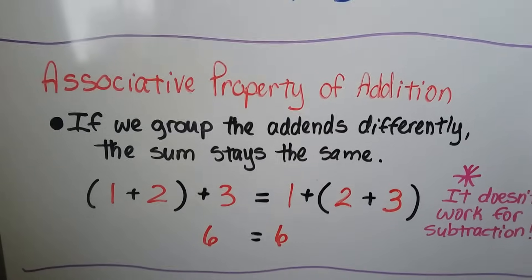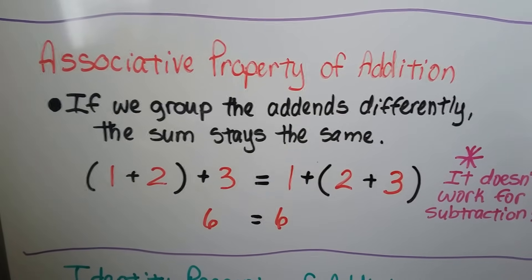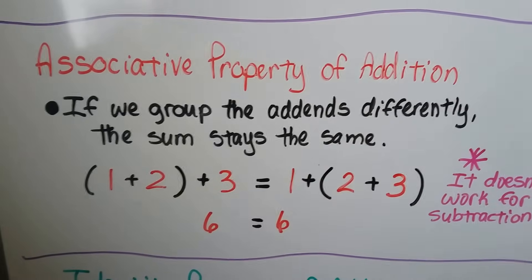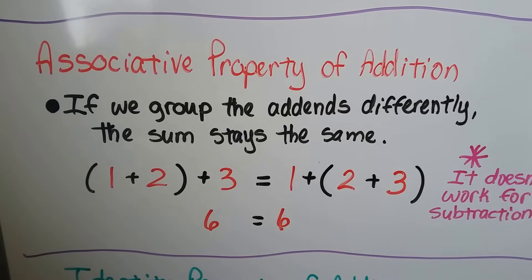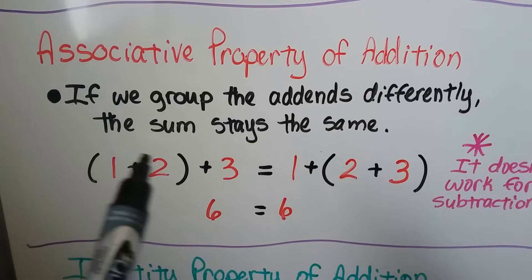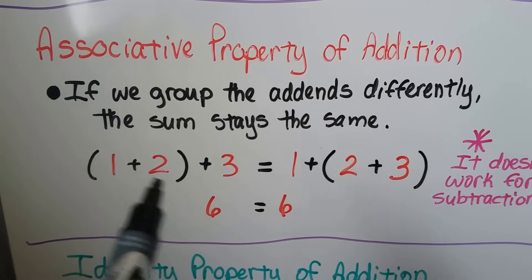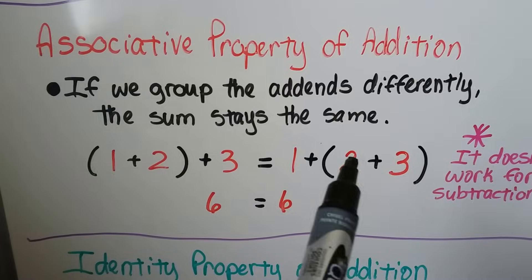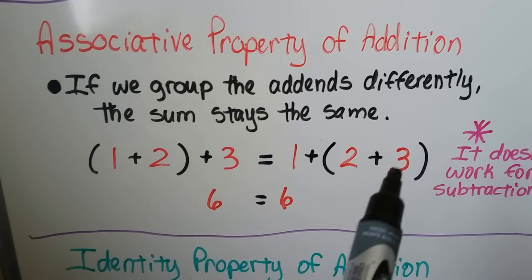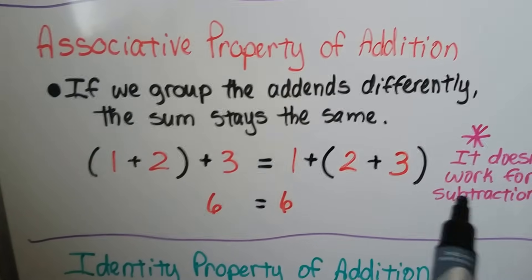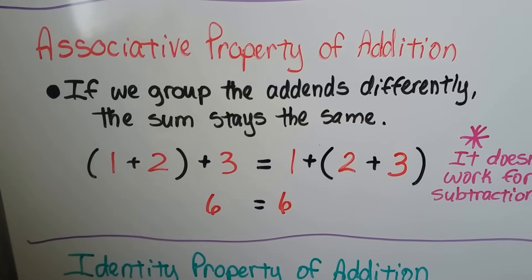The associative property of addition tells us we can group the add-ins differently, and the sum is going to stay the same. If we need to add 1 plus 2 plus 3, and the 1 plus 2 are grouped together, that is 3 plus 3, which is 6. And if the 2 plus 3 are grouped together, that's 5 plus 1, which is equal to 6. Note that it doesn't work for subtraction, which will be explained near the end of the video.